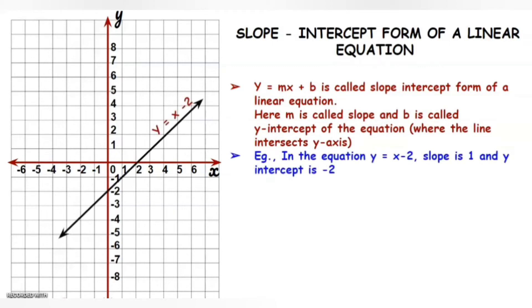For example, in the equation y is equal to x minus 2, slope is 1 which is the coefficient of x and minus 2 is the y-intercept where it intersects the y-axis.